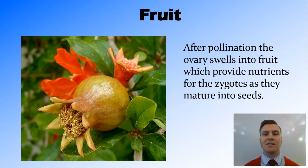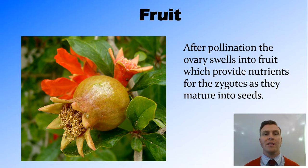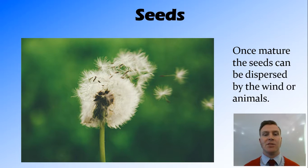Once pollination has occurred, a zygote forms down in the ovary, which swells up and creates what we call fruit. Angiosperms produce more than just what we think of as fruit — some we wouldn't consider to be fruits, like the fruit found in grass. That fruit's job is to provide nutrients and house the seed or zygote until it turns into a mature seed. Once that seed is mature, it can be dispersed by the wind, animals, or just dropped on the ground, and different plants have different adaptations to allow for this.